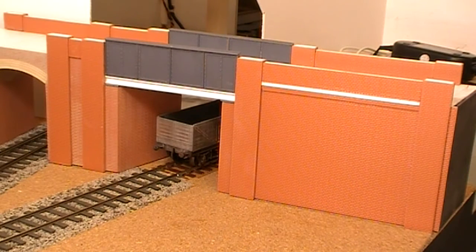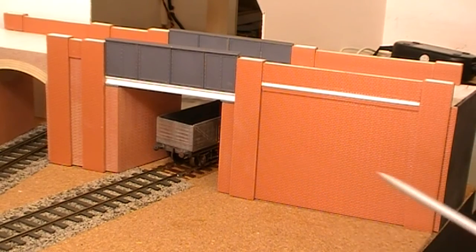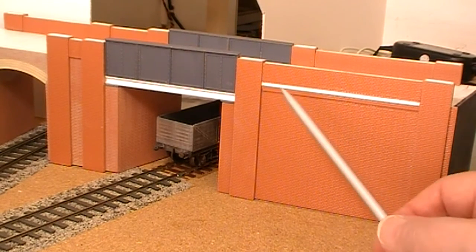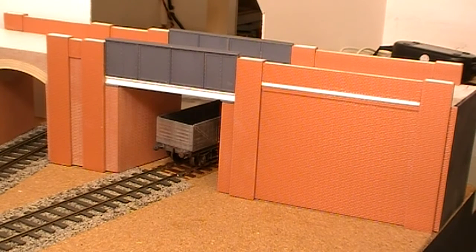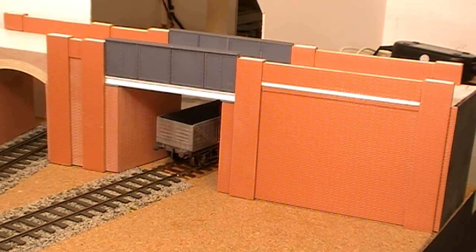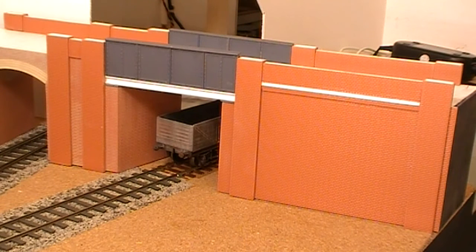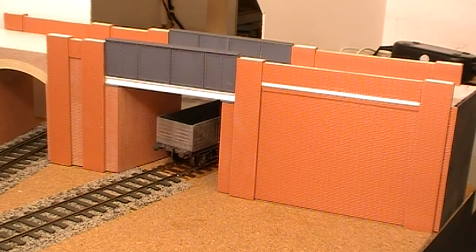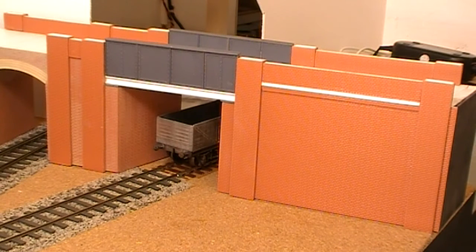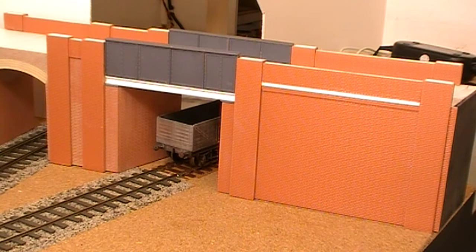Underneath that piece of plastruct is another piece of plastruct which is half a millimeter by three millimeters and that's got three courses of bricks on it to represent, in Scalescenes speak, the ledge.